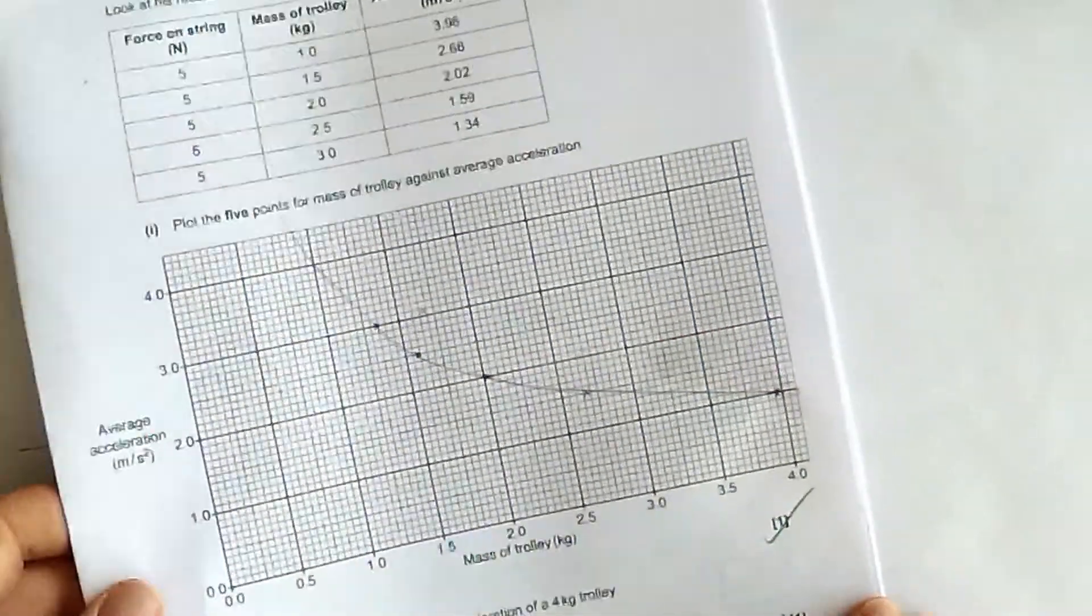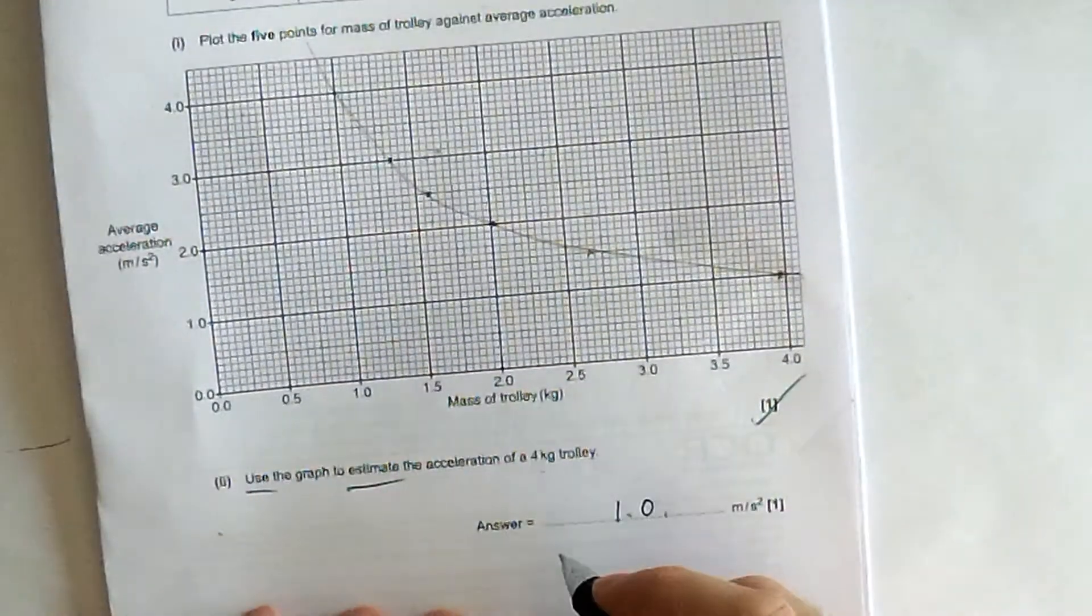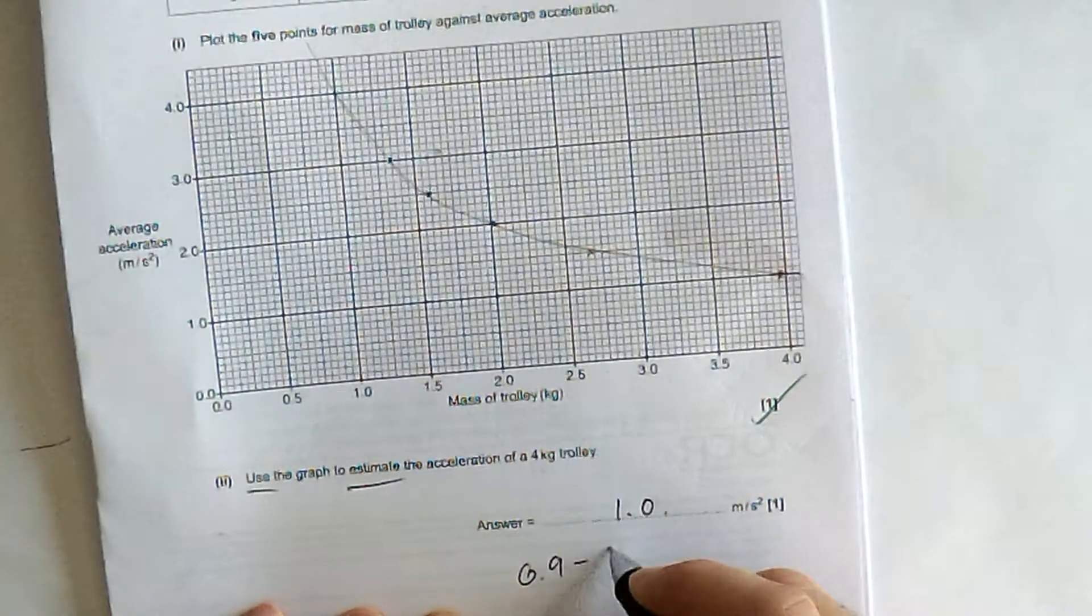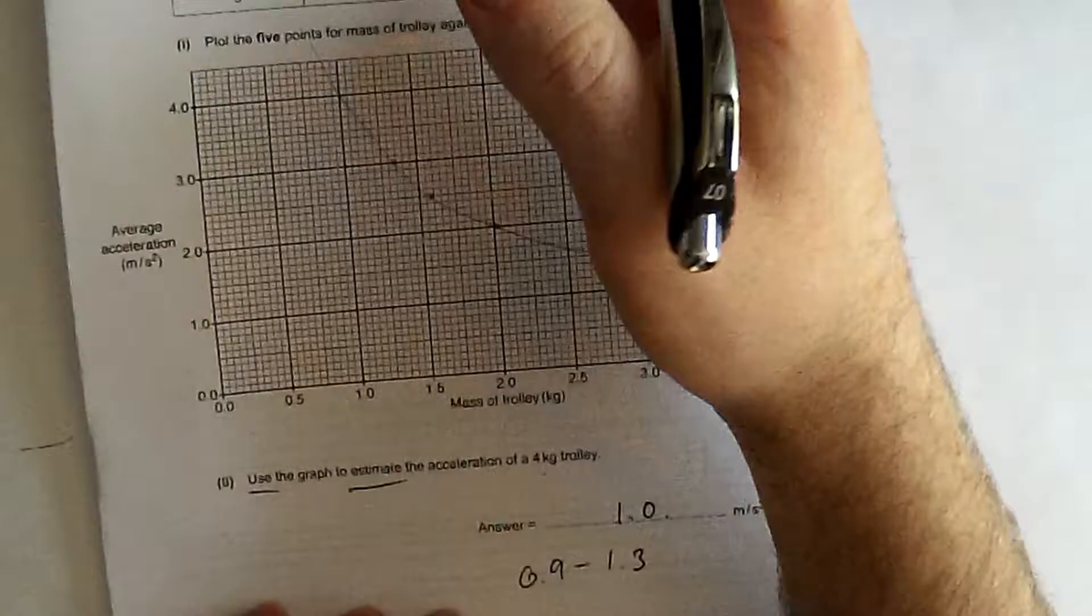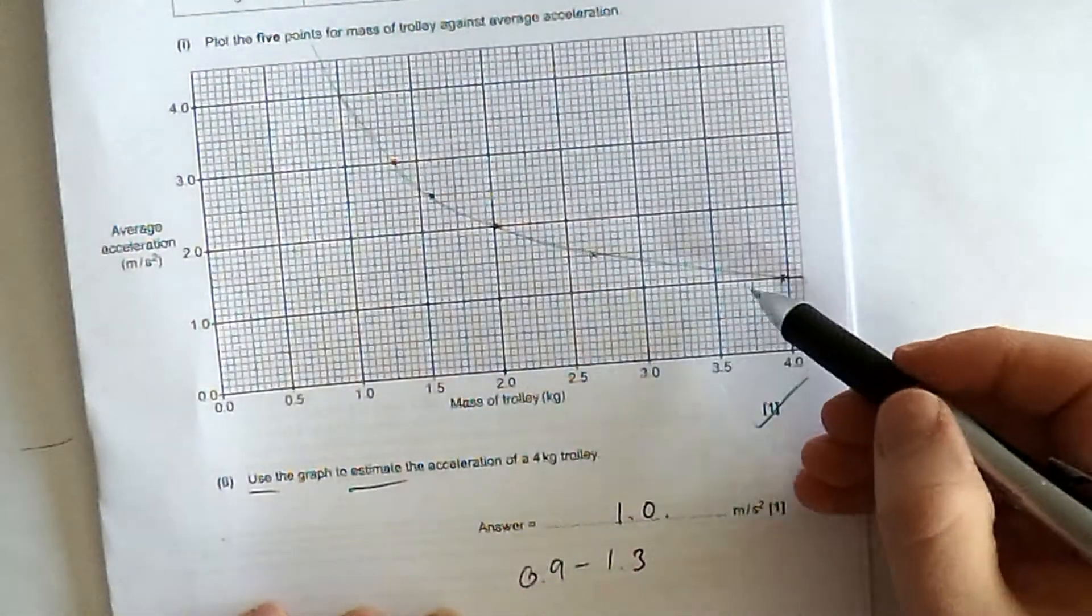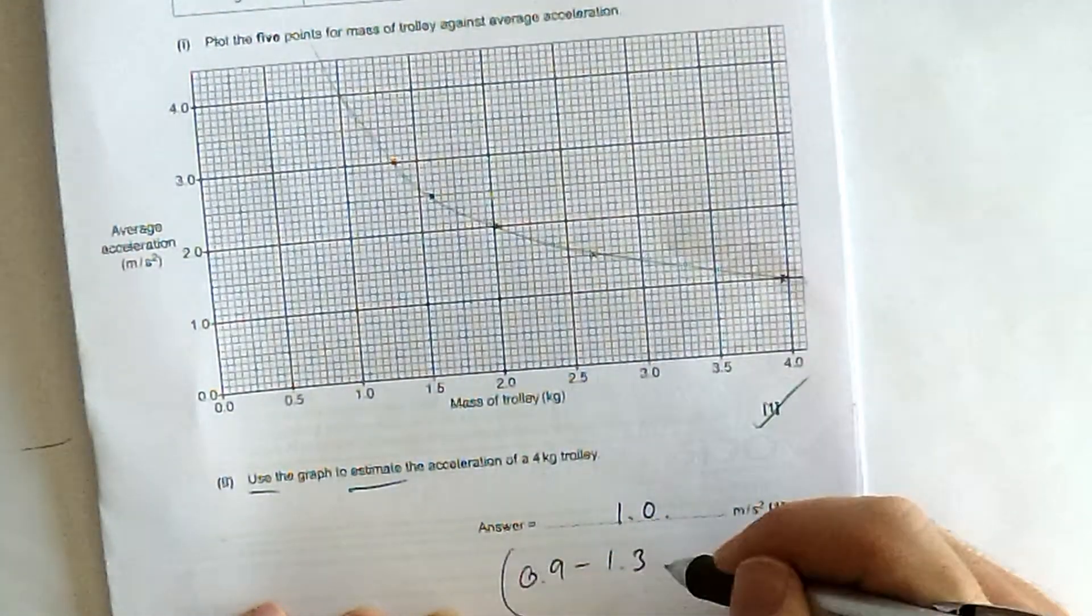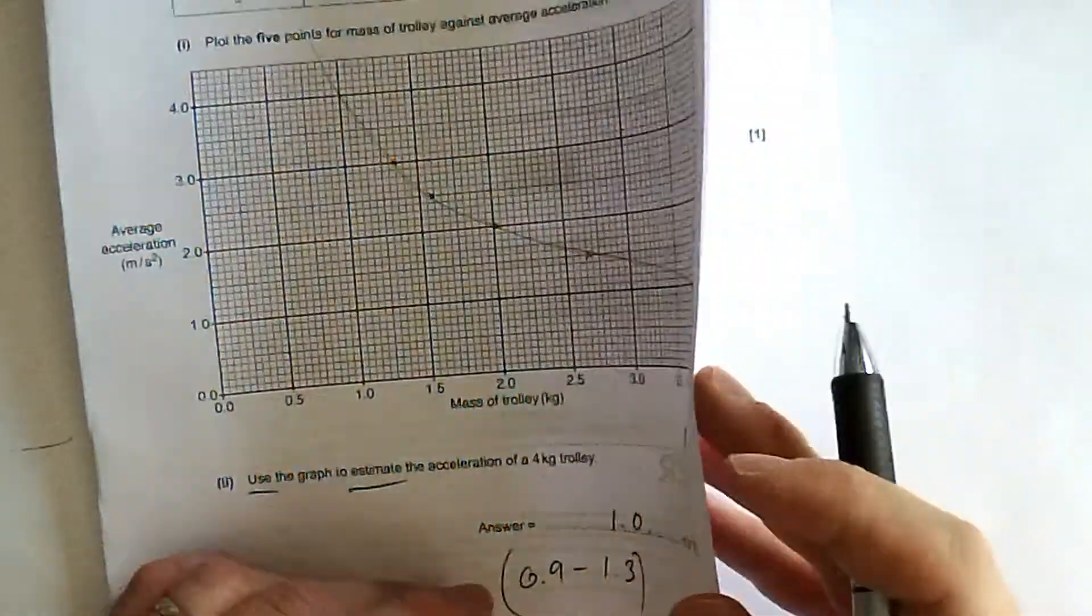Now, they have allowed you a range. They have said anything from 0.9 to 1.3. There's quite a large range in this case because there's quite a lot of extrapolation to do. But you need to be really accurate in these new GCSEs with your graph skills.